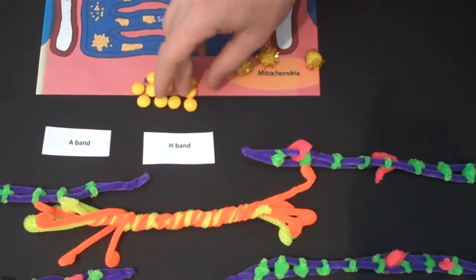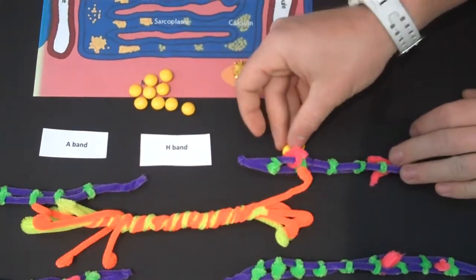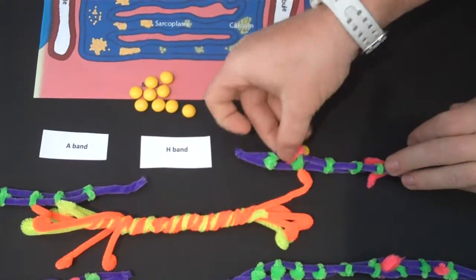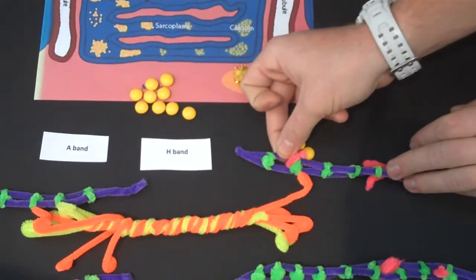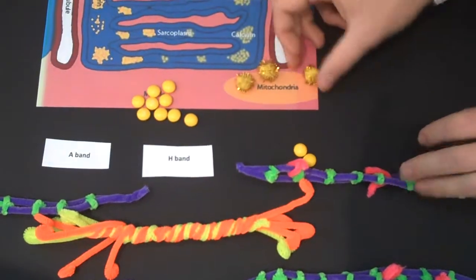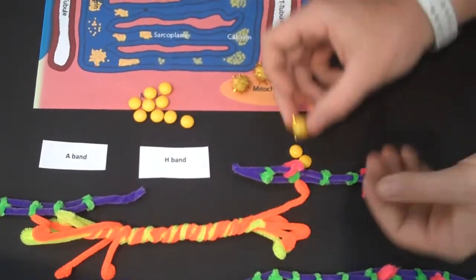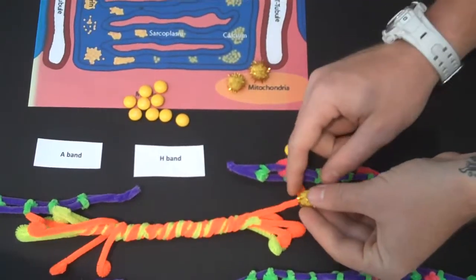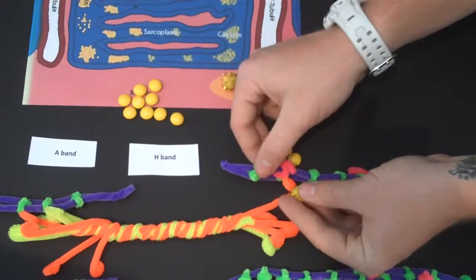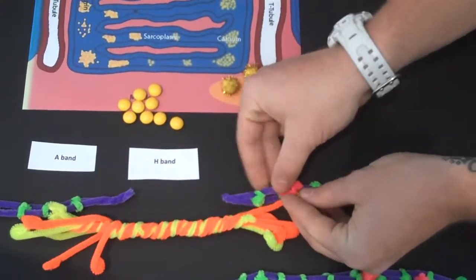Calcium binds to the troponin on the thin filament of the sarcomere. This pulls the tropomyosin off the active site of the actin. ATP from the mitochondria puts the myosin into a high energy state and binds to the exposed active site. This forms a cross bridge.